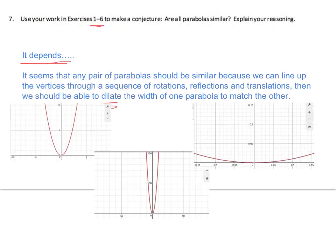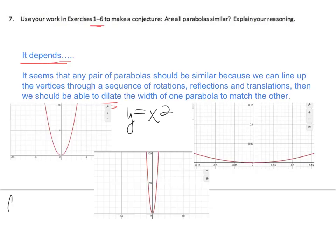I graphed y equals x squared and changed my viewing window a few times to prove a point. This first view is negative 10 to 10. Well, if you look at the axis changed from negative 50 to positive 50, up to 100 — it's the exact same graph, but it looks really, really skinny. And then zoomed in really close, we get a parabola that is really wide and flat. These are actually congruent, even though they don't look like it.